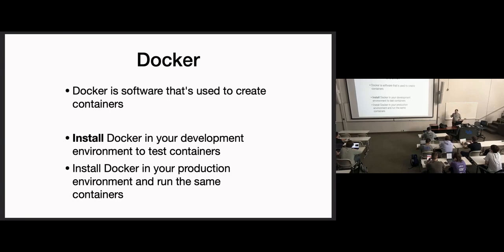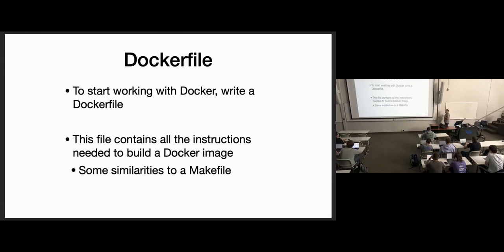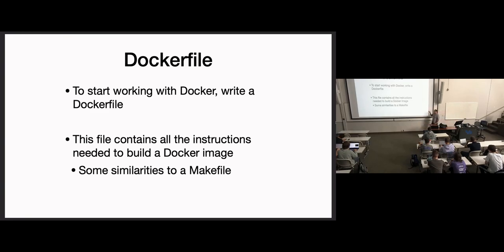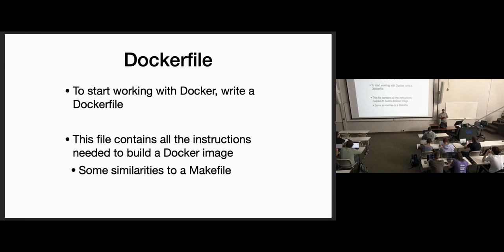Install Docker — that's your first step. Docker is going to read your Dockerfile to know what to do and how to build these containers. The Dockerfile is a script which tells Docker exactly which steps to take. It's very similar to a Makefile, where a Makefile tells how to compile your code — a Dockerfile is going to tell Docker how to create your containers and images. We'll make the distinction between image and container soon.